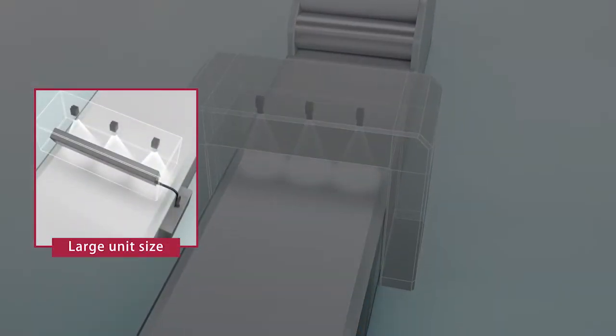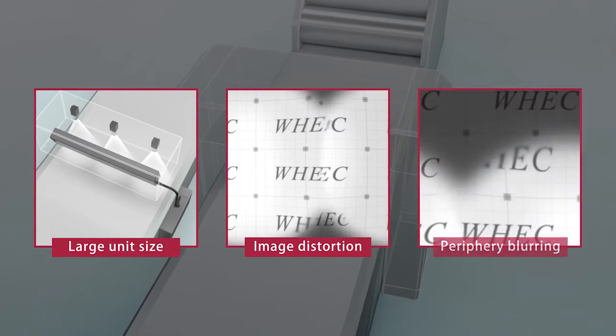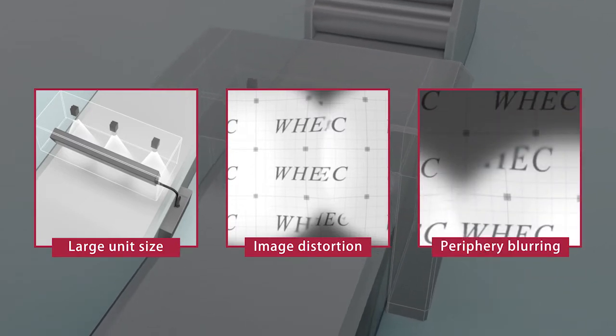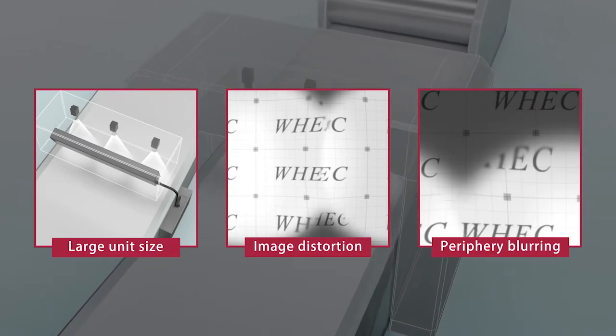However, using cameras to perform inspections means dealing with problems specific to cameras: large unit size, image distortion, periphery blurring, and the like.